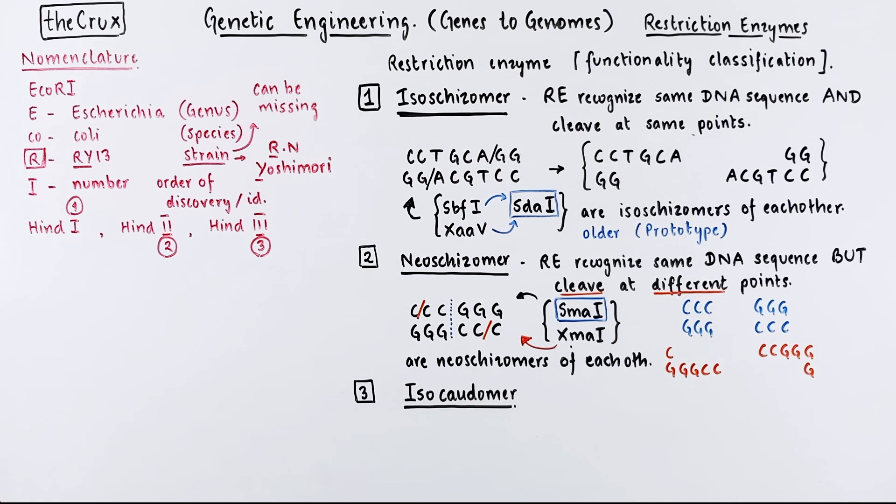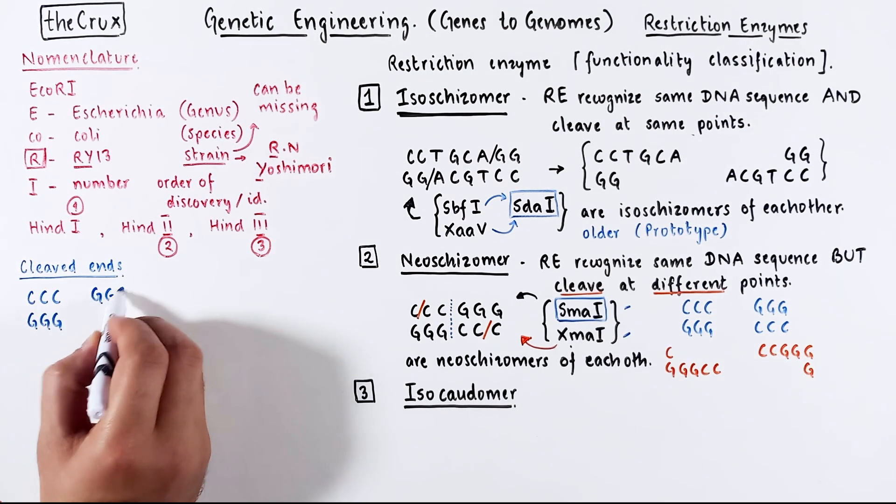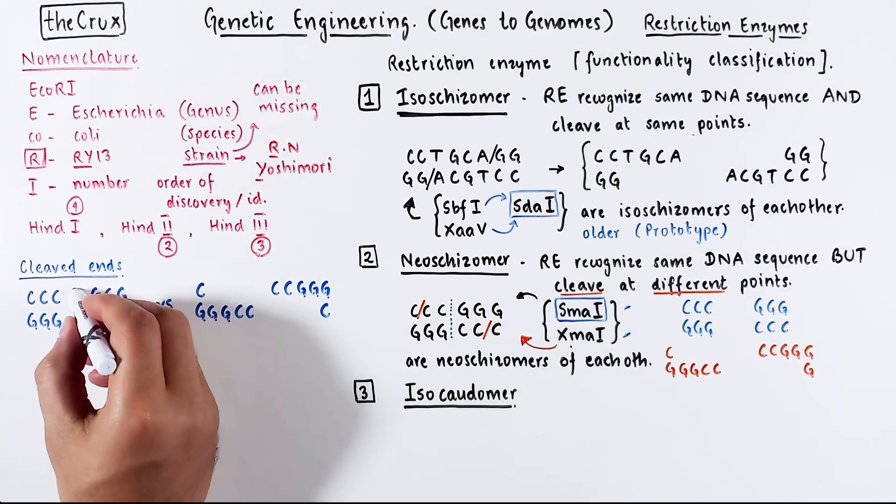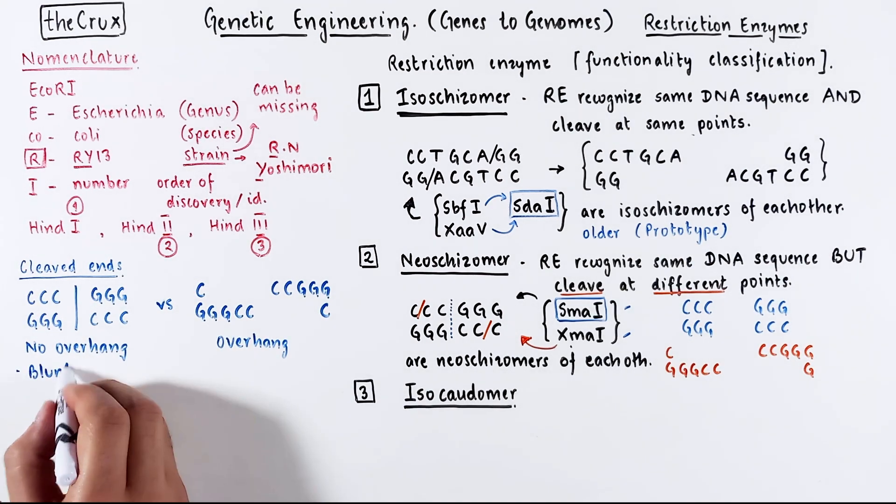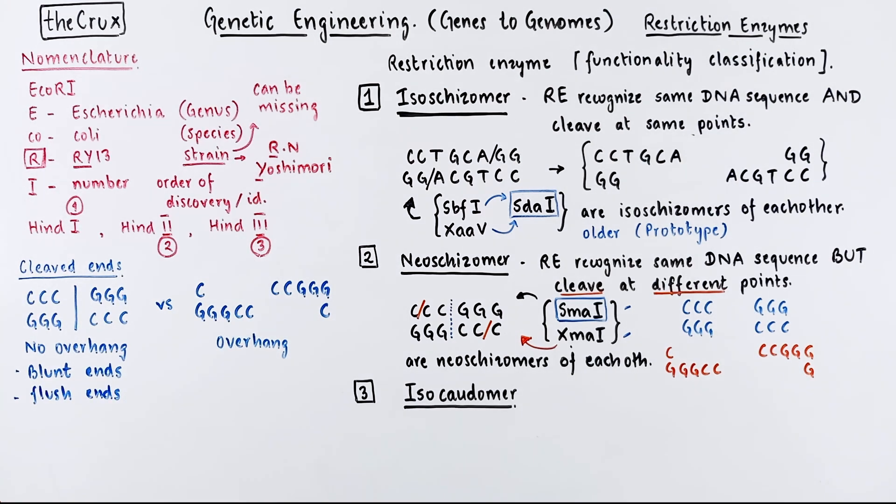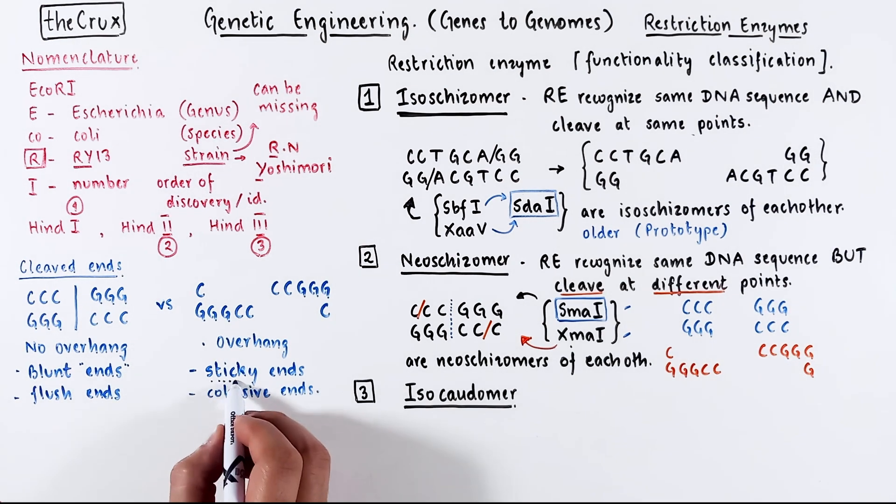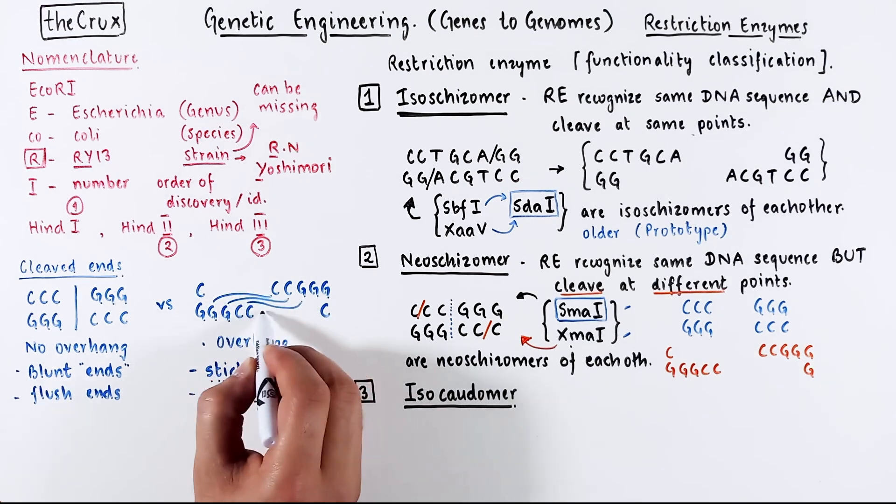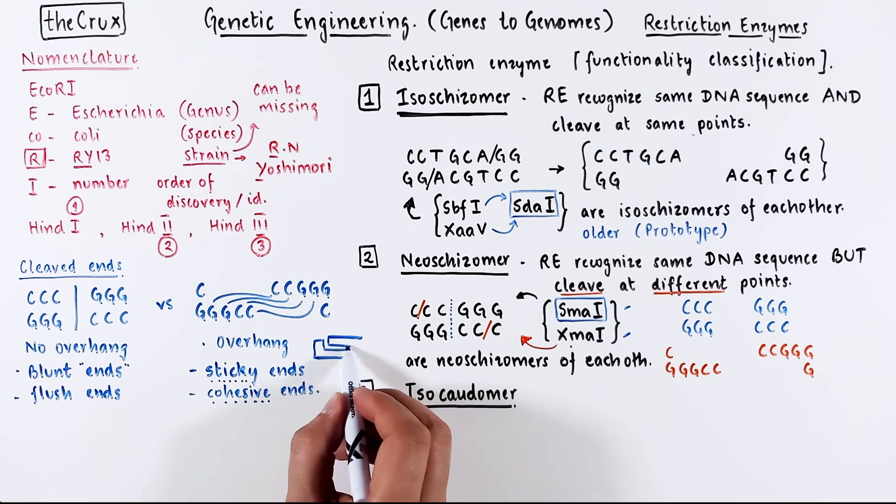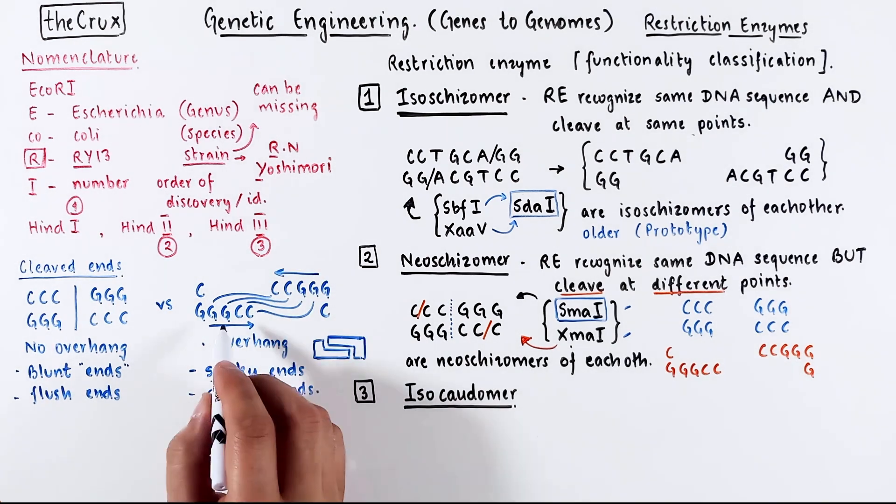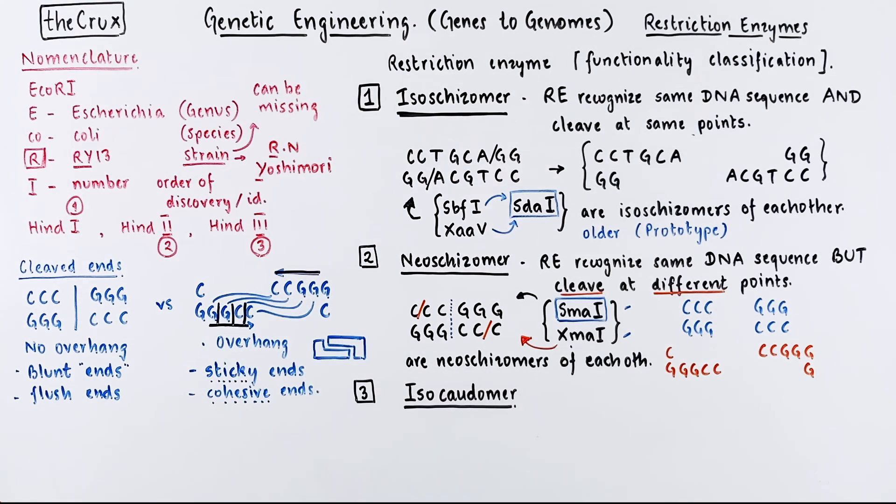The third bucket is isocaudomers. To understand isocaudomers, we have to understand the nature and types of cleaved ends. In this neochizomer example, we notice that you have two types of cuts. One where there is no overhang, the other with a single stranded DNA overhang. The straight cut is a blunt or flush cut. So the ends are blunt or flush even though there are no real ends to speak of. In contrast, the overhanging ends are called sticky or cohesive ends. The sticky or cohesiveness comes from the fact that the ends from the same cut are compatible and stick with each other. If you have played the game of Tetris, this is pretty much that. The length of the overhang depends on the enzyme. It can be 4 bases, 3 bases, shorter or longer depending on the enzyme.